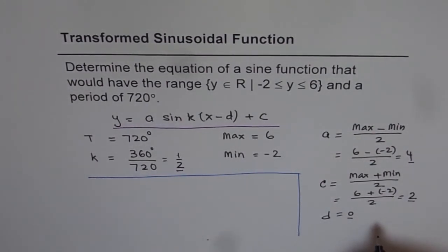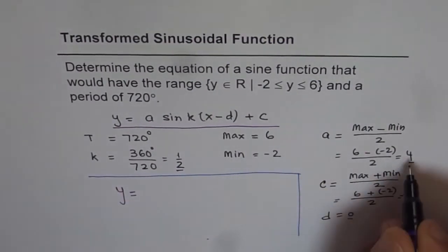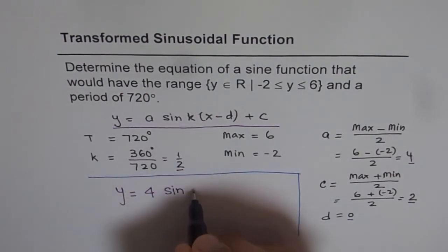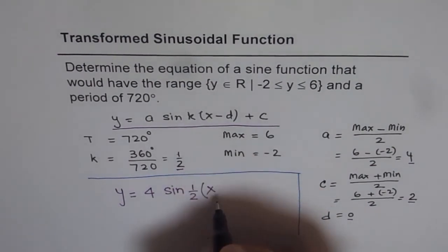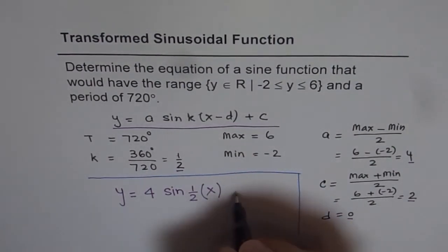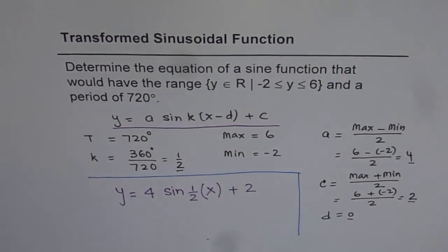So now we can write down our equation. So it is y equals to a is 4, sine k is half, x. We are saying d is 0 so we'll just close it. And c is plus 2 for us, plus 2. So that is how we can get the equation from the given conditions.